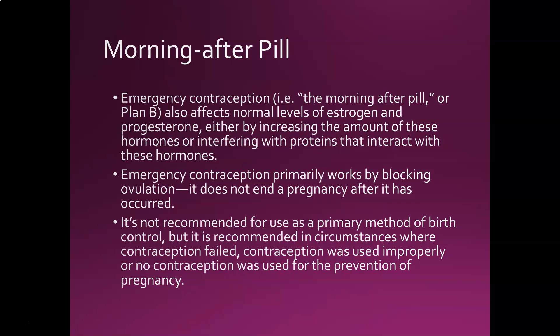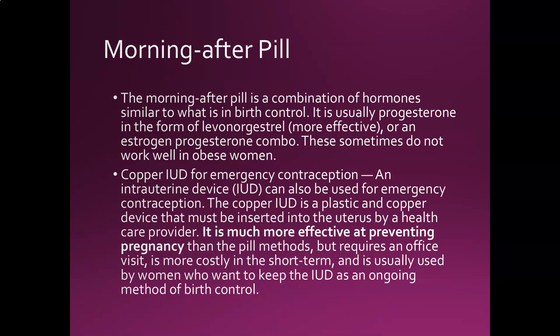What's in the morning-after pill is similar to regular birth control — usually a progestin form of levonorgestrel at a high dose, or sometimes an estrogen-progesterone combo. These can be less effective in obese women because estrogen and progesterone tend to be absorbed into fat cells. A copper IUD can also be used for emergency contraception — it's inserted into the uterus by a healthcare provider and is very effective, though it requires an office visit and higher cost. However, once it's in, you can keep it as an ongoing method of birth control.